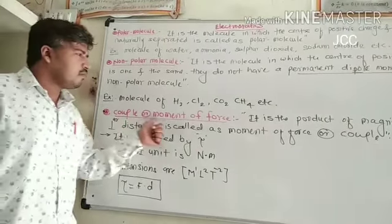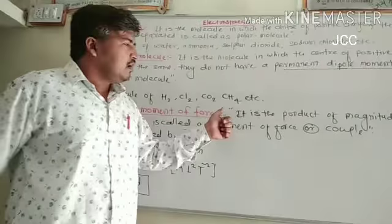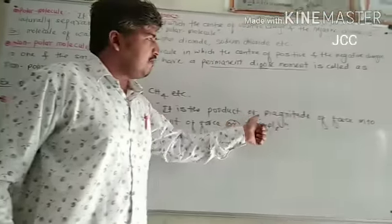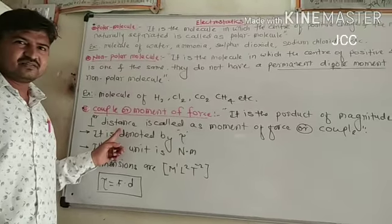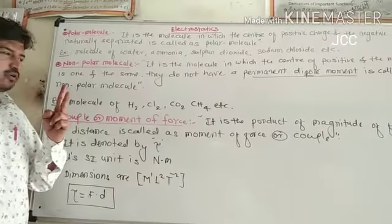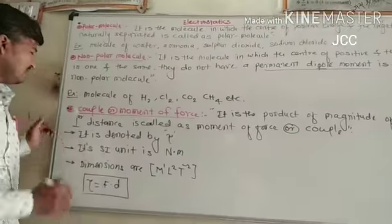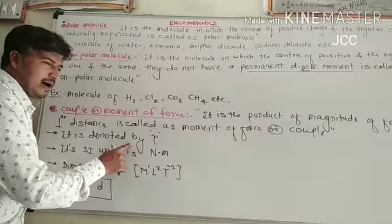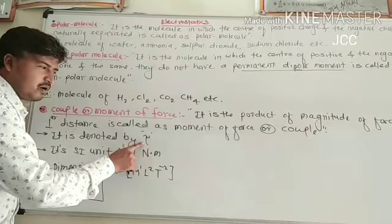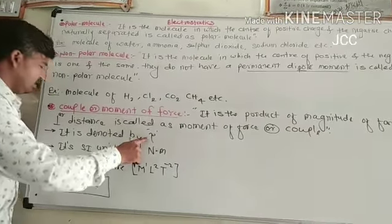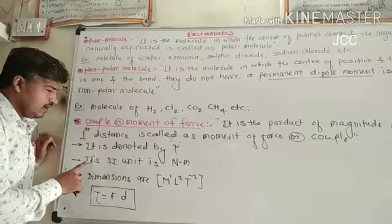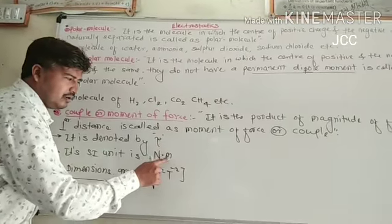Then, what is the couple or moment of force? It is the product of magnitude of force into perpendicular distance between two molecules. This is called moment of force or couple. It is denoted by tau. This is the symbol tau or couple. It is also known as torque.